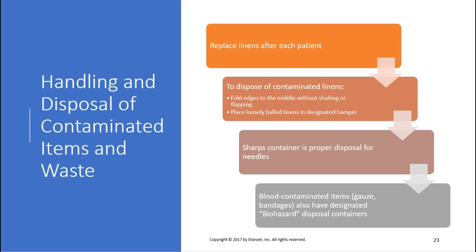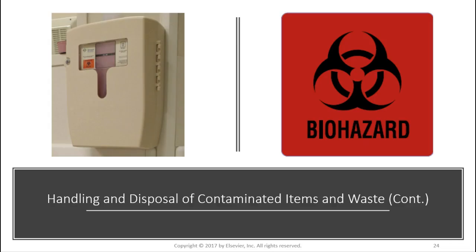For handling and disposing of contaminated items and waste: replace linens after each patient. To dispose of contaminated linens, fold the edges into the middle without shaking or flapping, then place balled linens in the designated hamper. A sharps container is the proper disposal for needles. Blood-containing items such as gauze and bandages have a biohazard disposal — the red biohazard bags. Don't reach inside a sharps container if it's locked. Anything drippy, oozy, or containing blood or bodily products goes in the biohazard.